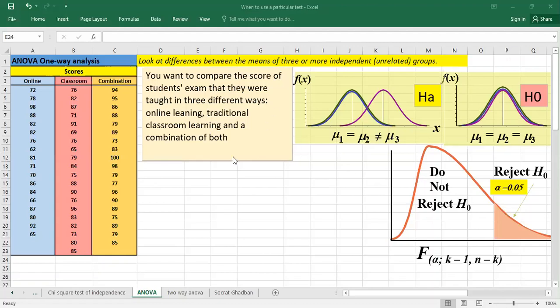As you can see here in our example, we want to compare the score of students' exams that they were taught in three different ways: online learning, traditional classroom learning, and a combination of both. As you can see here we're having the different scores, and the number per group it's not the same, so we don't have any problem in this.